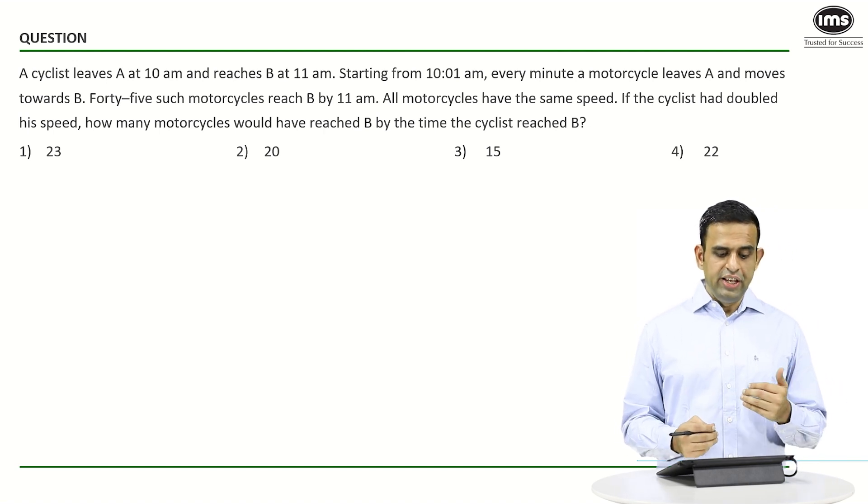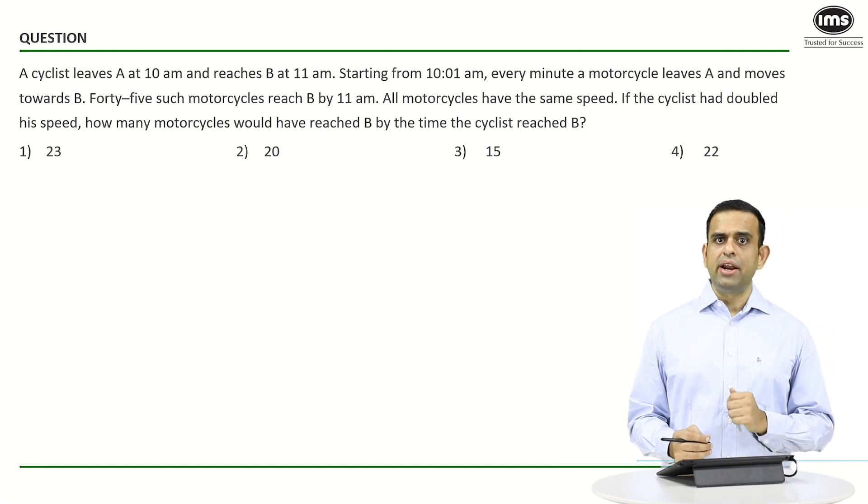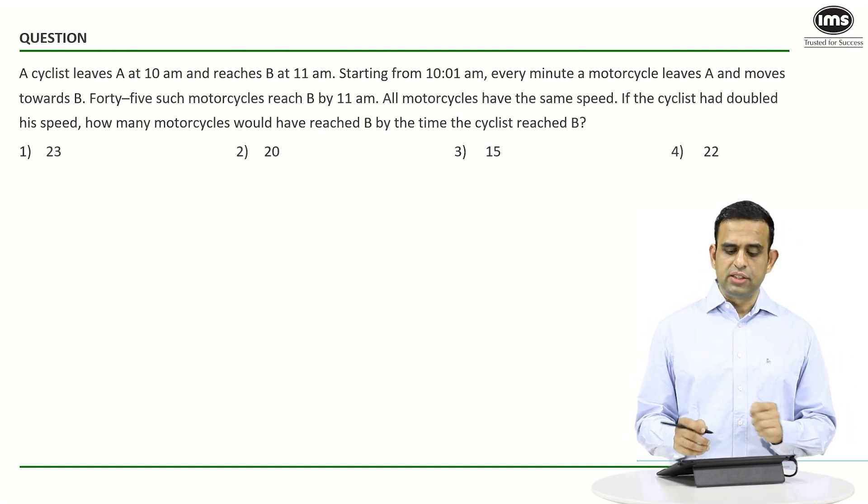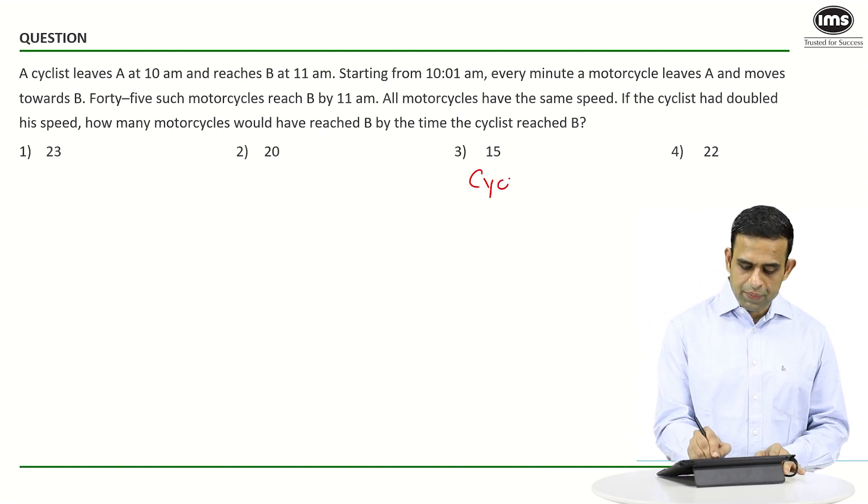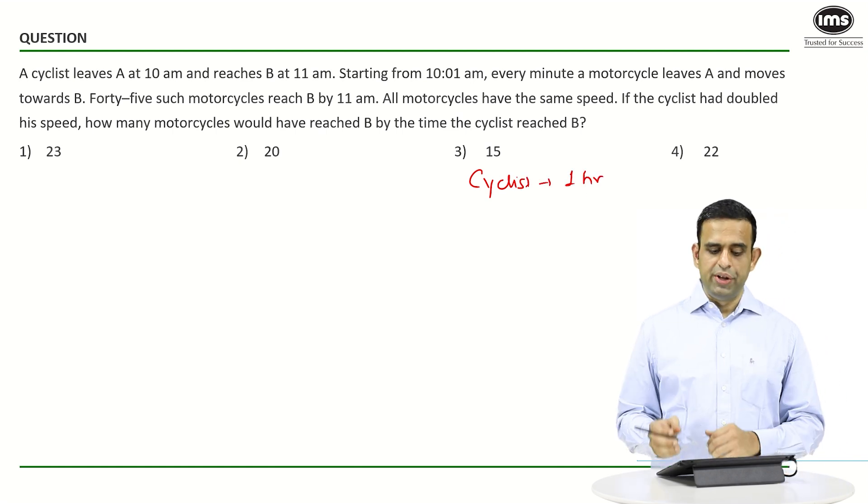A cyclist leaves point A at 10 a.m. and reaches point B at 11 a.m. It simply means that the cyclist takes one hour to go from A to B.